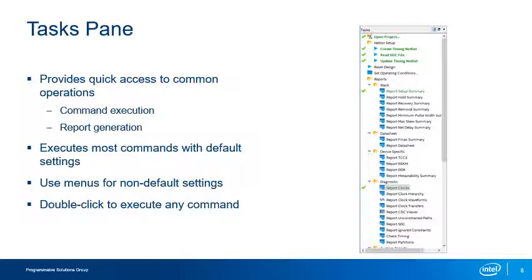Once a task is run, the task turns green and a green check mark is placed next to it. Tasks can only be performed once on the current SDC Timing Netlist, so there is no need to run them again until a new netlist is created or the design is reset.